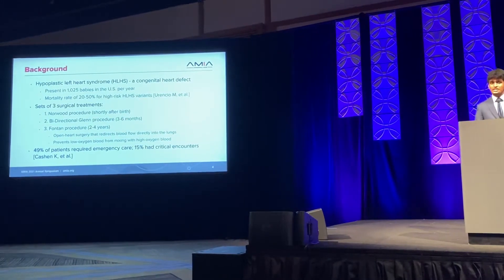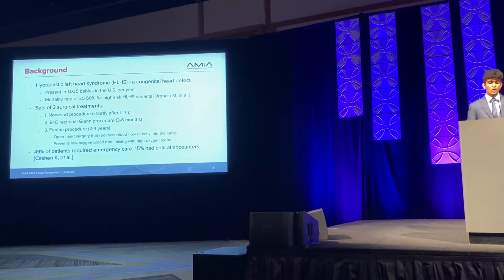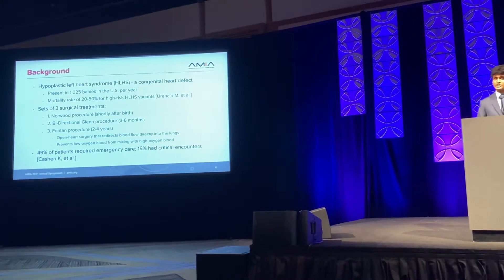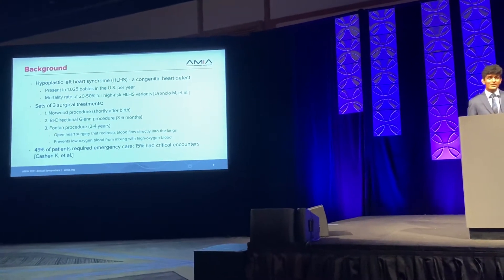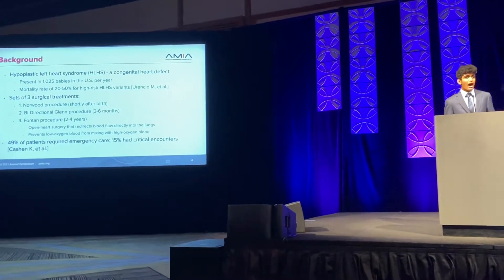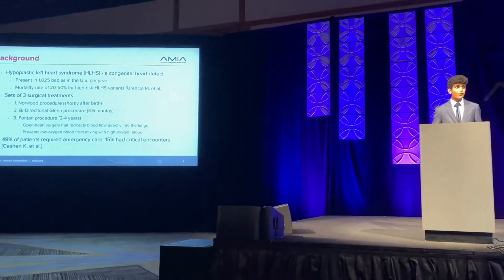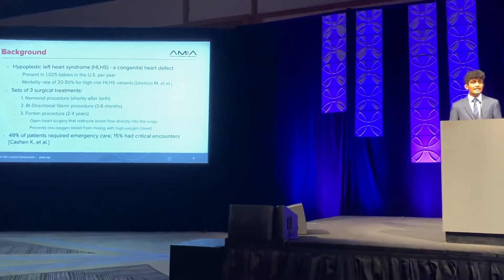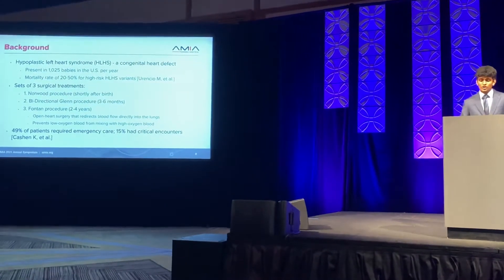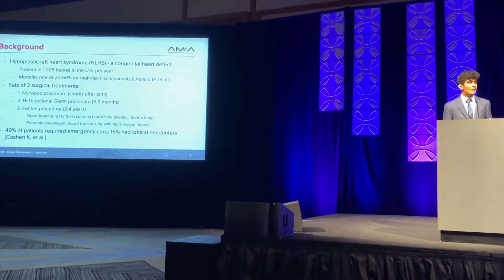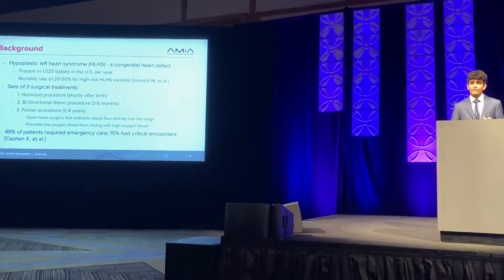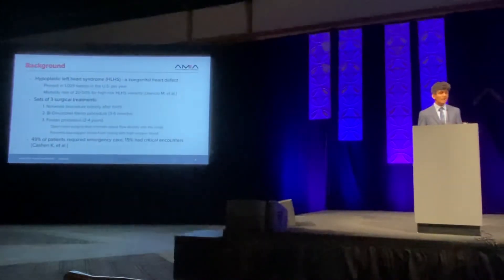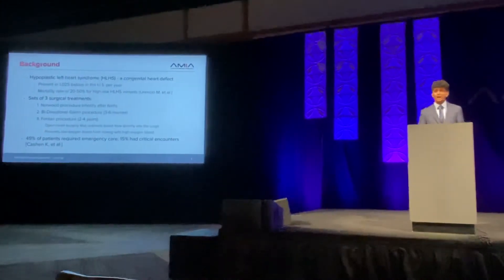The first is the Norwood procedure, which patients undergo shortly after birth. The second is the bidirectional Glenn procedure at three to six months. The third, which is the one I'll be looking at in my study, is the Fontan procedure at two to four years. This open heart surgery redirects blood flow directly into the lungs, preventing low-oxygen blood from mixing with high-oxygen blood, which can lead to fatal consequences if not treated immediately.